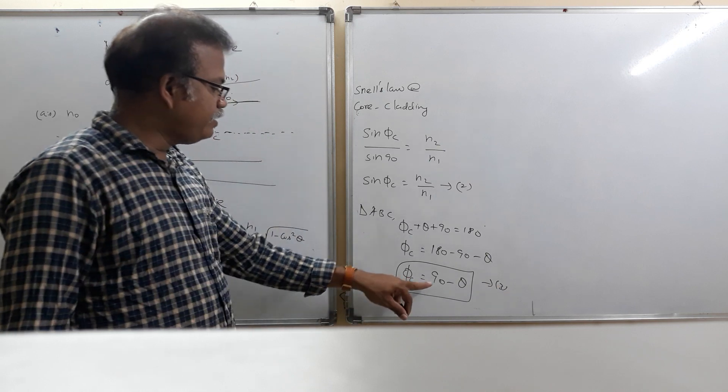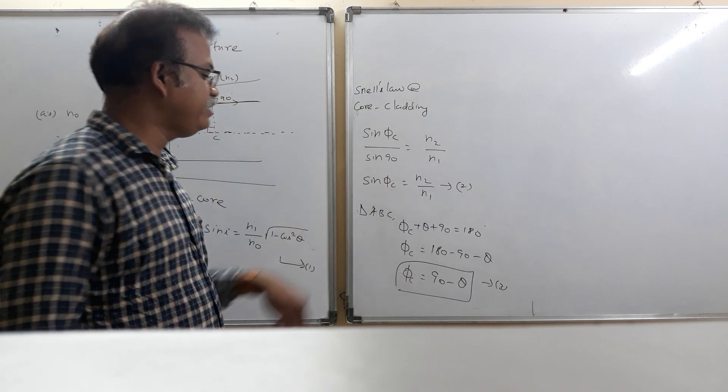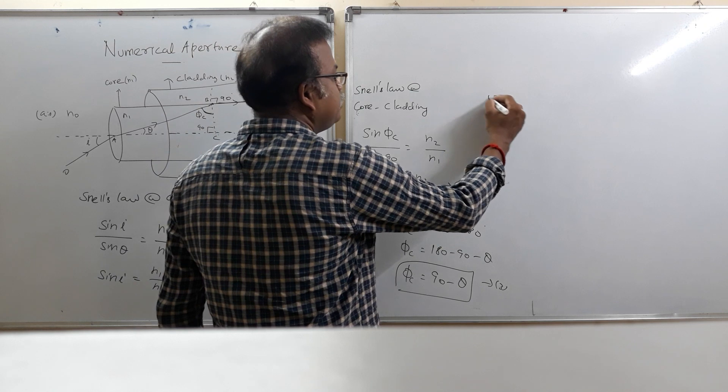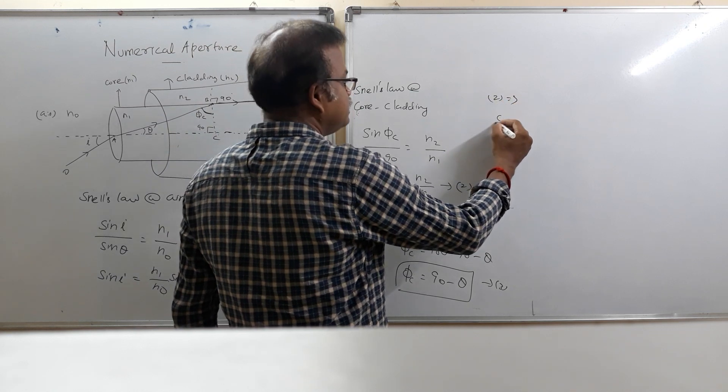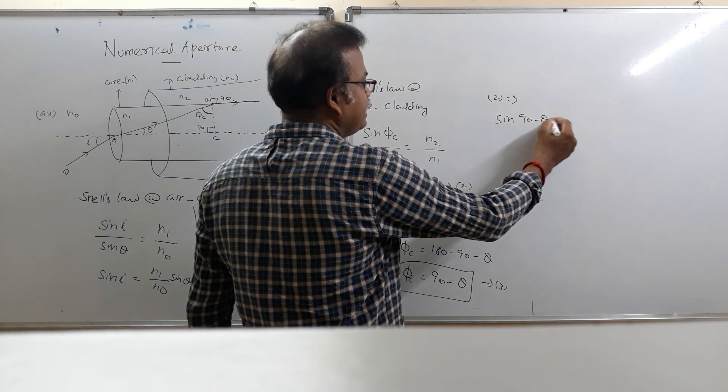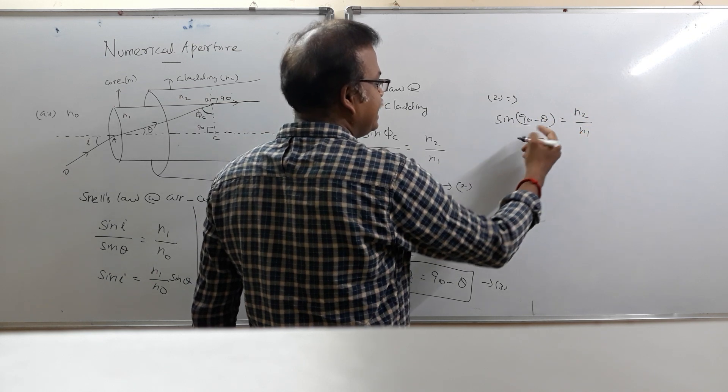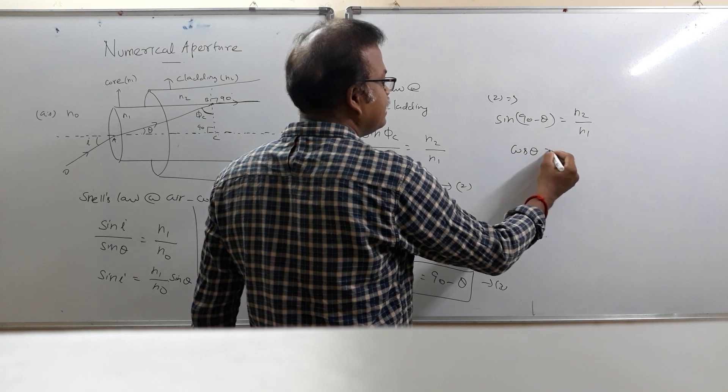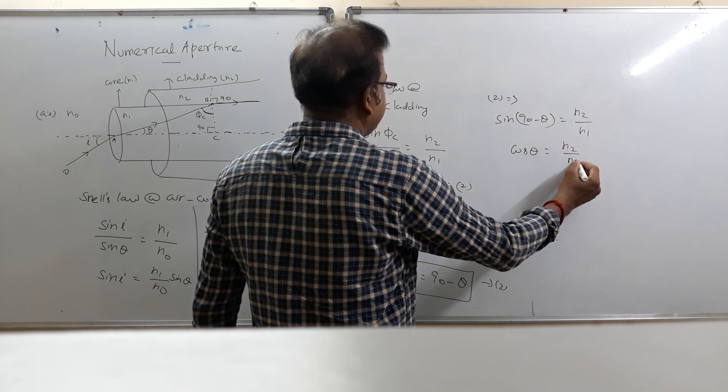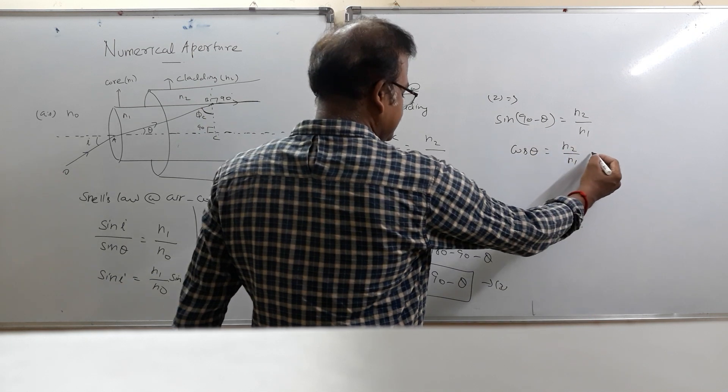Now, by using the phi c value in equation 2, equation 2 becomes sine 90 minus theta is equal to N2 by N1. Sine 90 minus theta is equal to cos theta, N2 by N1. This is equation number 4.